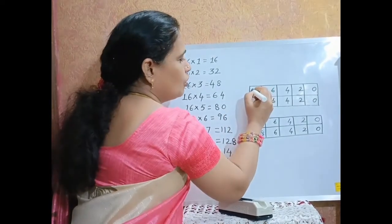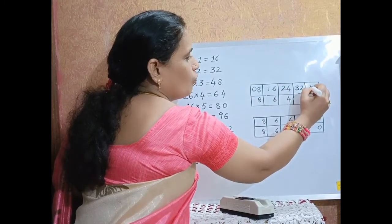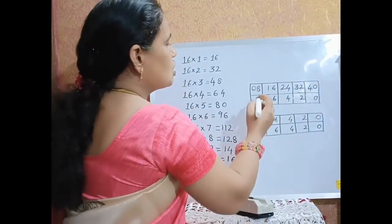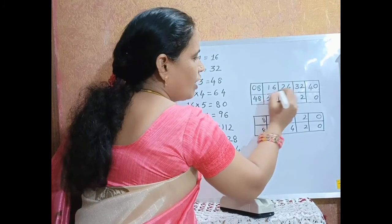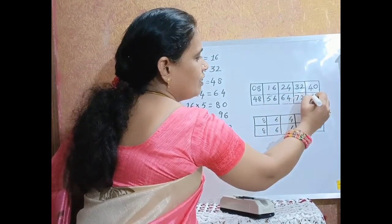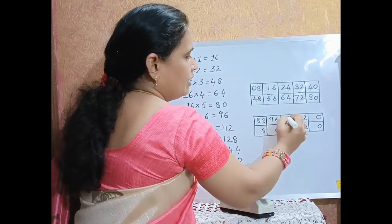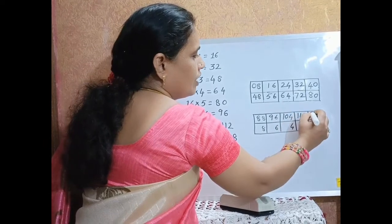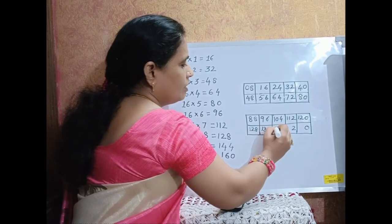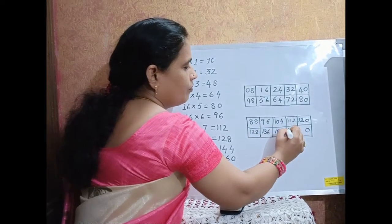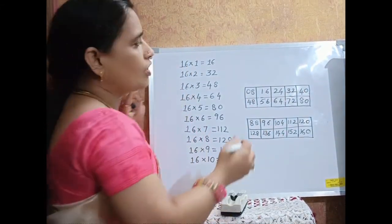For the tens digit, write 0, 1, 2, 3, 4. Again, start with 4 from the bottom box: 4, 5, 6, 7, 8, 9, 10, 11, 12, 13, 14, 15, 16. Then cross out the numbers which are not required.